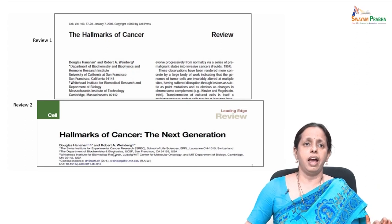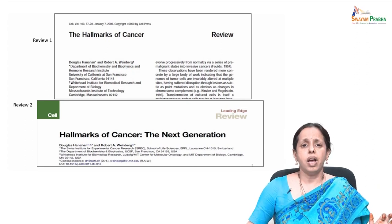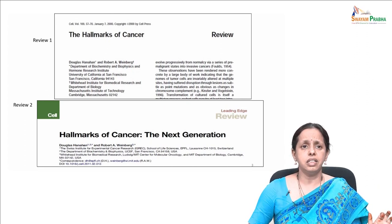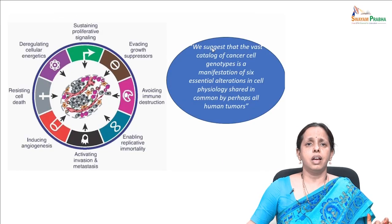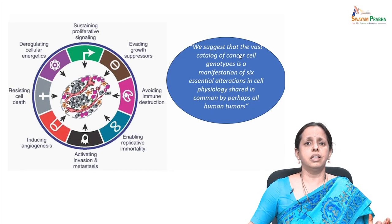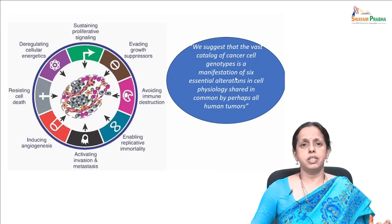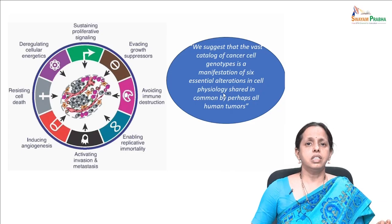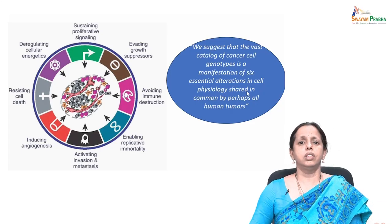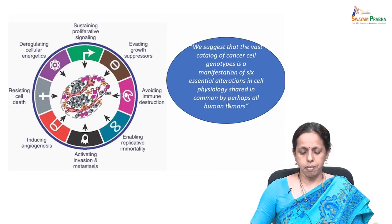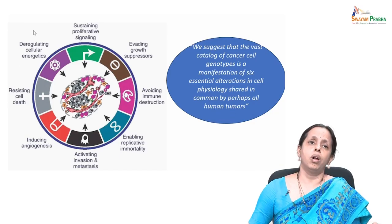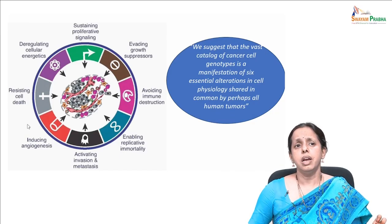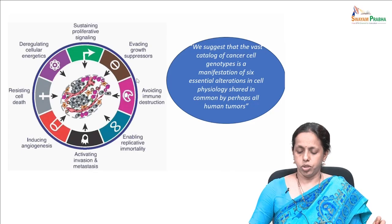That is what Weinberg and group highlighted. As we move on, we will see what exactly these hallmarks are. Their first report quotes: 'We suggest that the catalogue of cancer cells' genotype is a manifestation of six essential alterations in cell physiology shared in common by perhaps all human tumours.' If these hallmarks are present, they are essentially present in all human tumours.